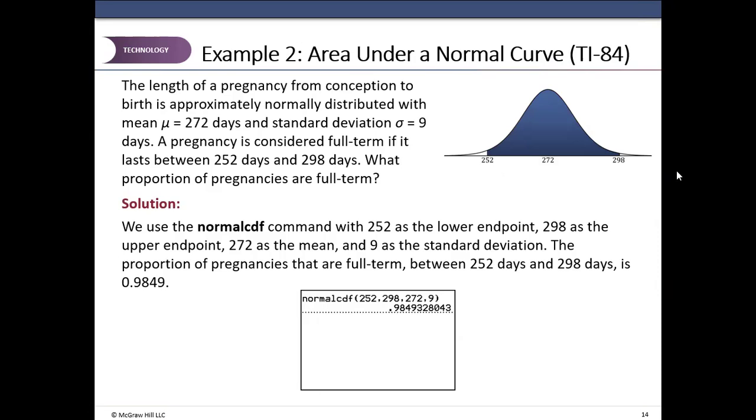Lower boundary is 252. Upper boundary is 298. Because that's the area we want to find under the normal curve between 252 and 298. Mean is 272, standard deviation is 9. Paste, enter and enter. So about 98.5 percent of the pregnancies will last between 252 and 298 days.